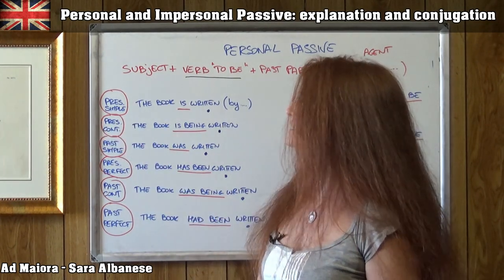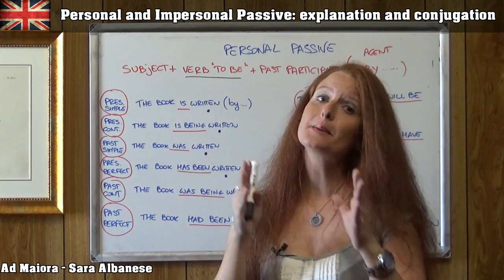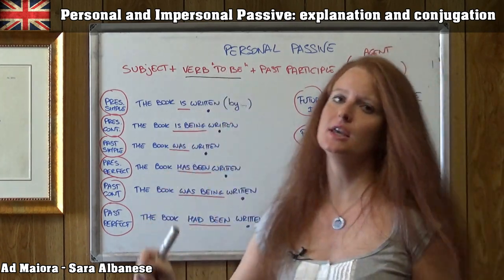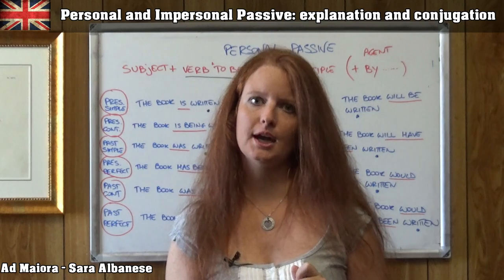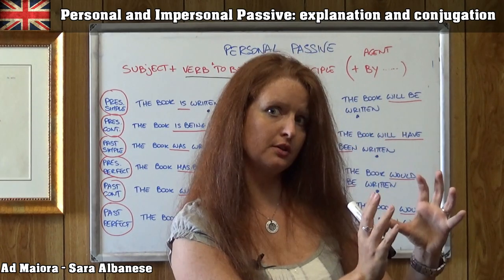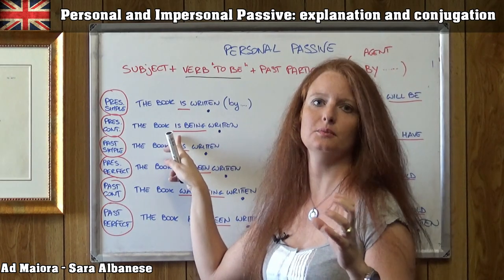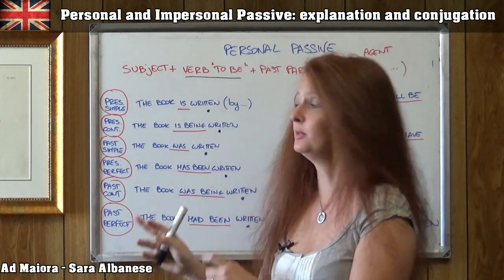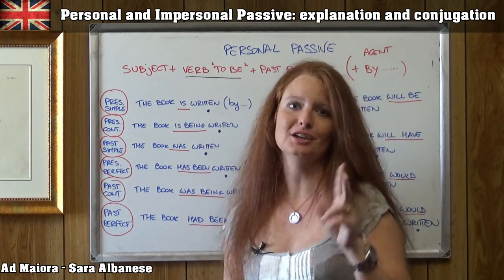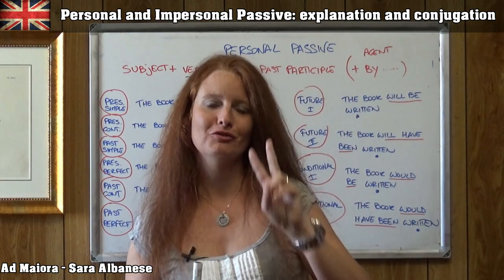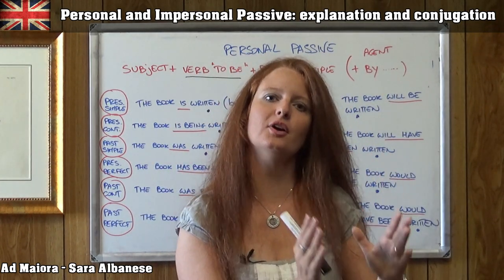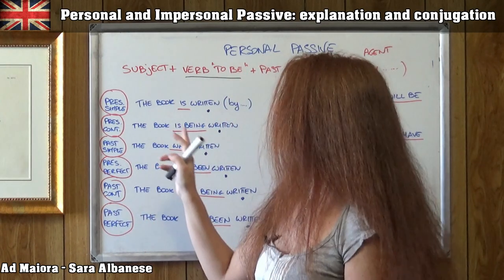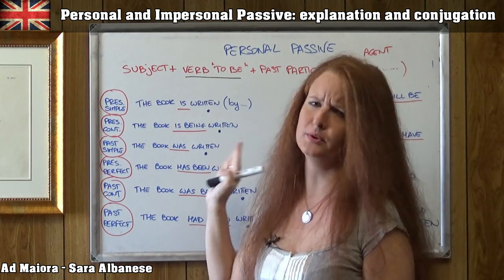Then the present continuous: 'the book is being written.' 'Is being' is the verb 'to be' in the present continuous. We know the present continuous is formed by the auxiliary 'to be' — that's the first 'is' — and the -ing form of the verb, which is 'being.' So we have 'to be' two times: the first is the auxiliary verb and the second part is the gerund. 'Written' is always the same.